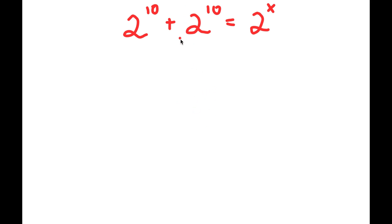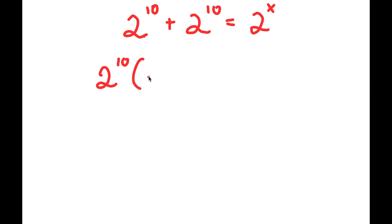In this problem, I have 2 to the power of 10 plus 2 to the power of 10 is equal to 2 to the power of x. To solve this, I'm going to factor out 2 to the power of 10. So I get 2 to the power of 10 times 1 plus 1 is equal to 2 to the power of x.